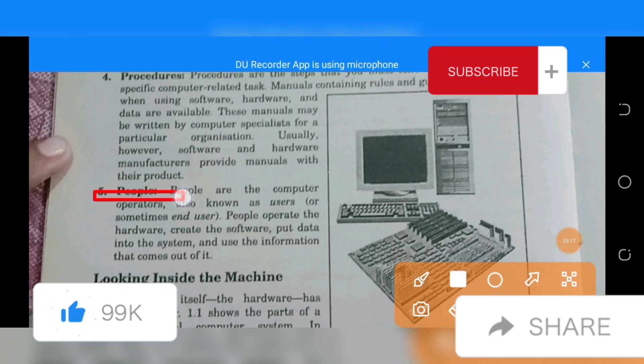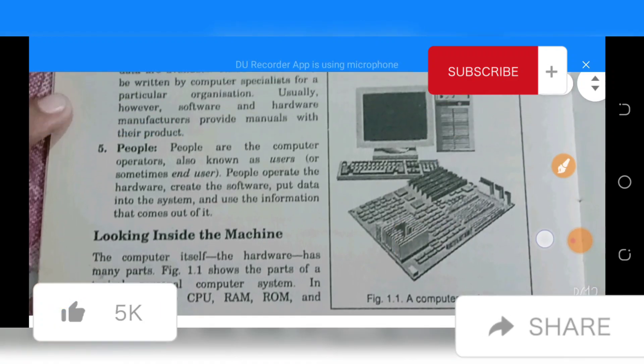People are the computer operators, also known as users. People operate the hardware, create the software, put data into the system, and use the information that comes out of it.